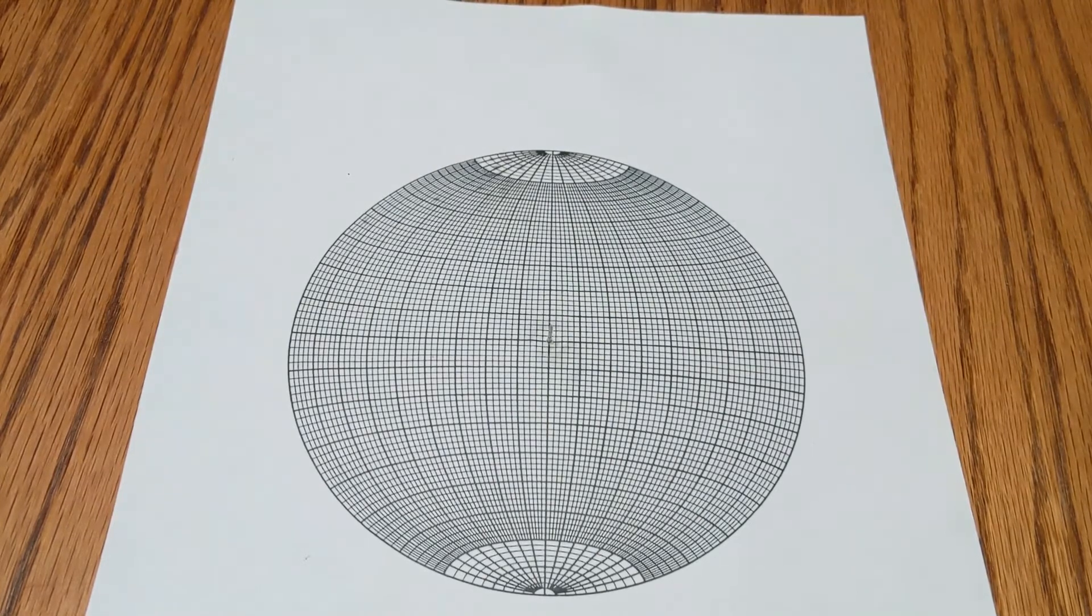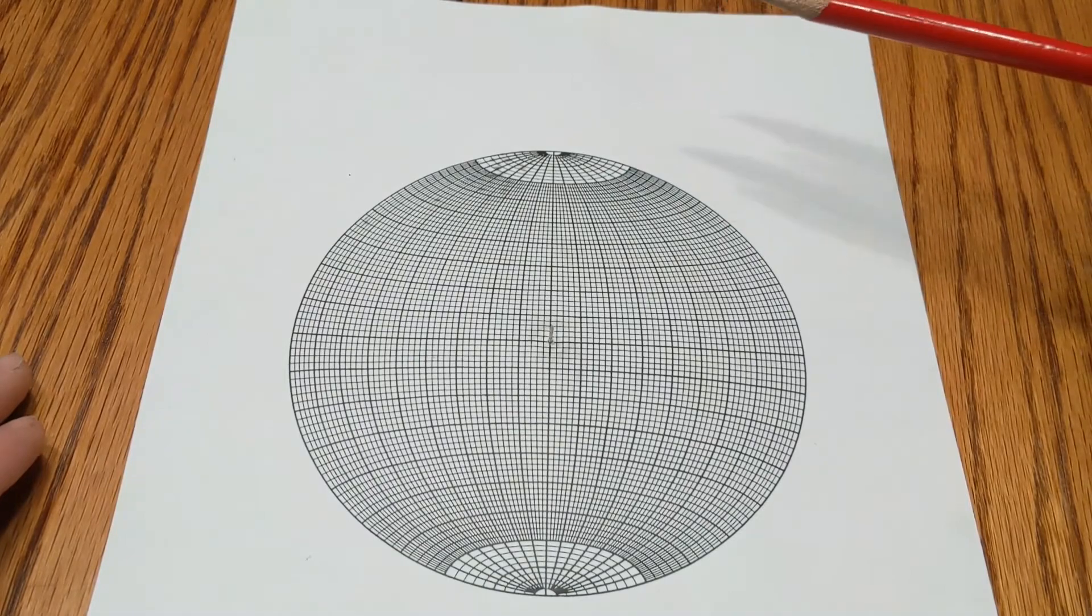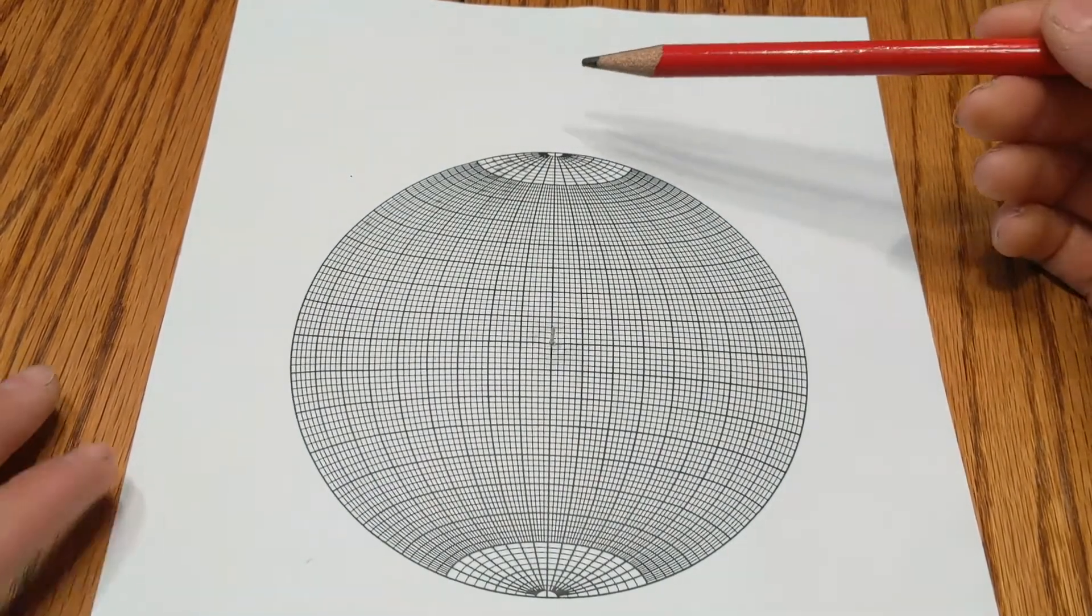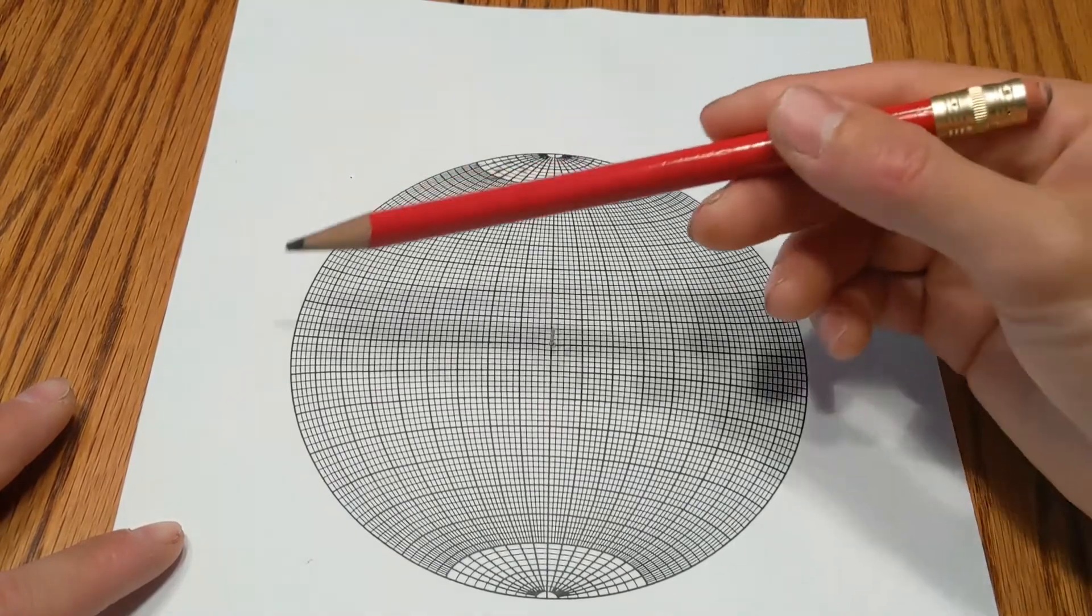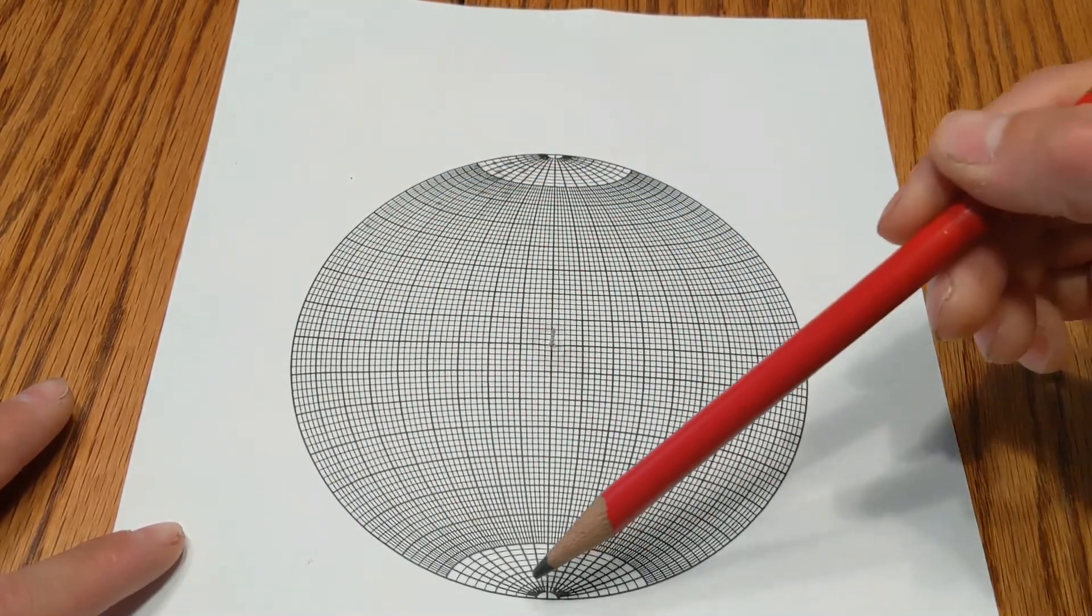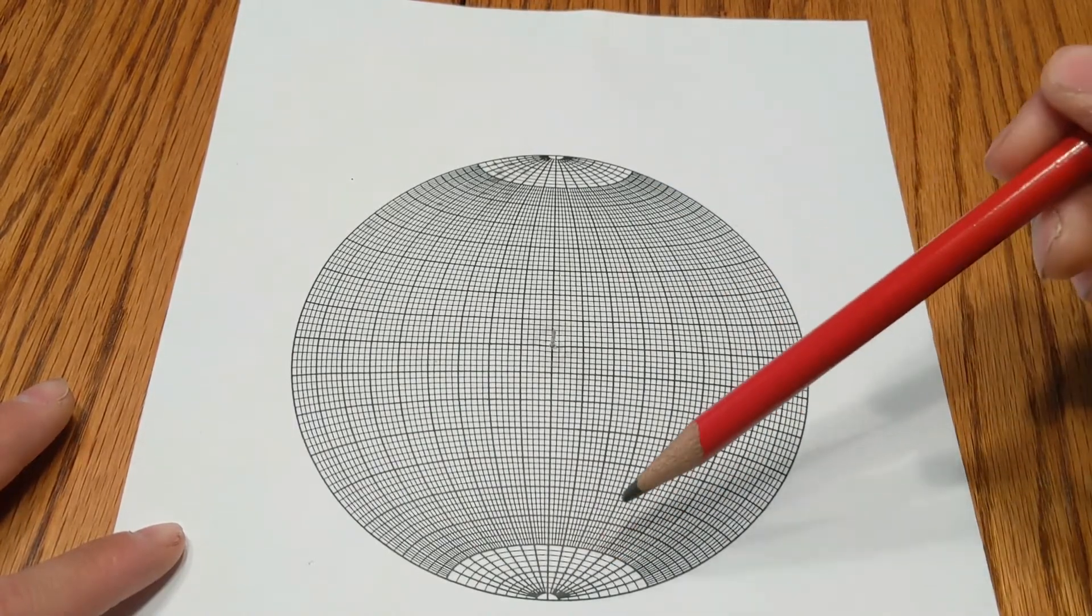If you look at a stereo net, you'll notice that there are two prominent line or grid patterns. The first are these, you can use the outside circle, and then these other circles that follow the same pattern. Those are referred to as the great circles.